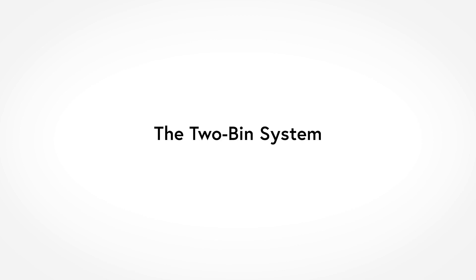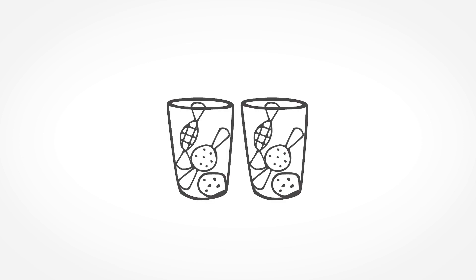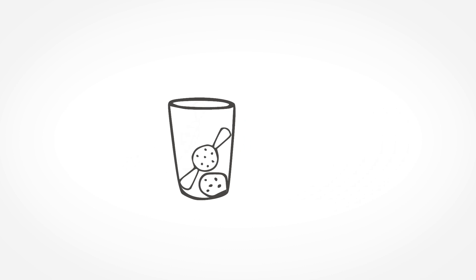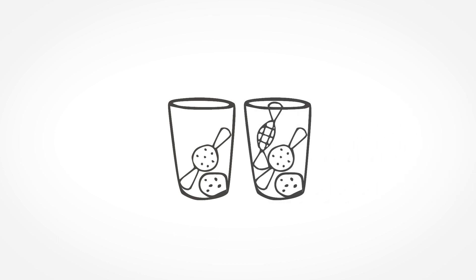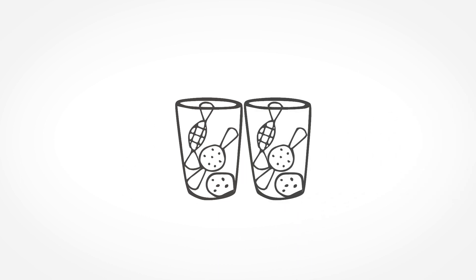One of the simplest reorder point systems there is, is called a two-bin system. You will find it in many places in factories, in offices, and even in households. Here's how it works: keep two bins of what you need close to the workstation. When the first bin is empty, order a new one. While you wait for the new bin, use the second bin. And when the new bin arrives, you will have two bins again. Often the empty bin is picked up by the logistics department and simply used as an order signal for the next one.